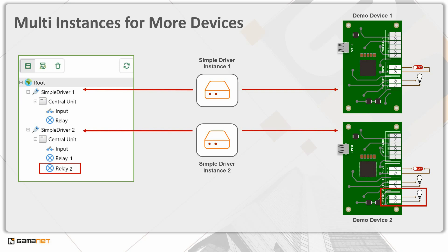The driver must be programmed to be able to work with all possible configurations supported by the device manufacturer. If developers use GammaNet's generated functions, they will have prepared code for various types of subsystems at their disposal. Their task is to write code for a specific object, for example an output, in a way that allows it to work in multiple instances. When initializing the device context, these instances are automatically created according to the configuration in the device tree.